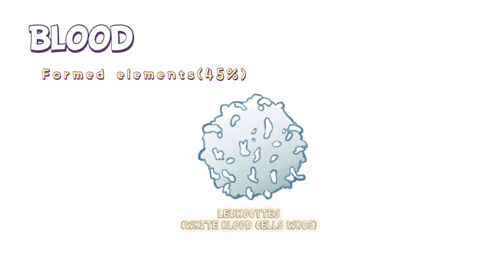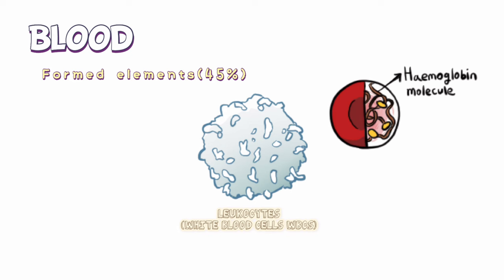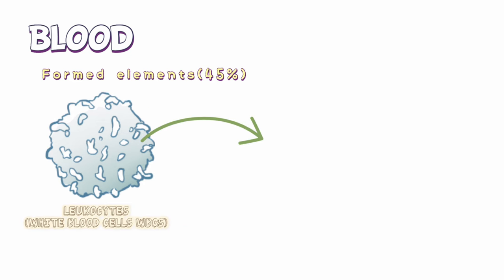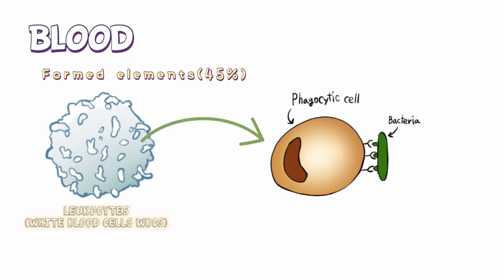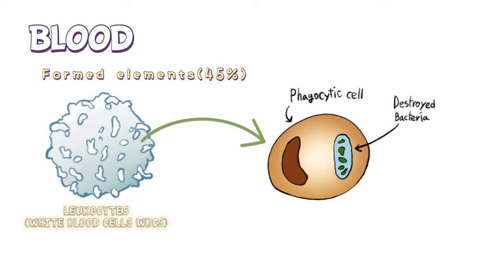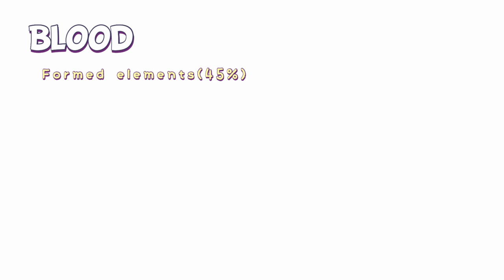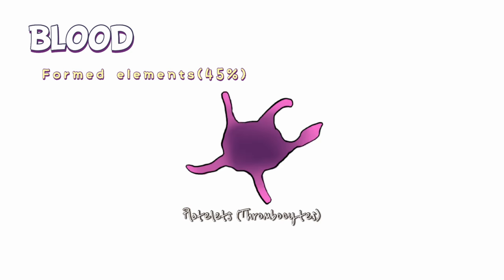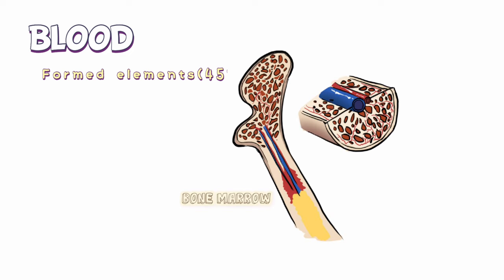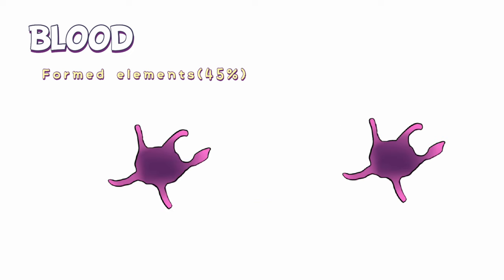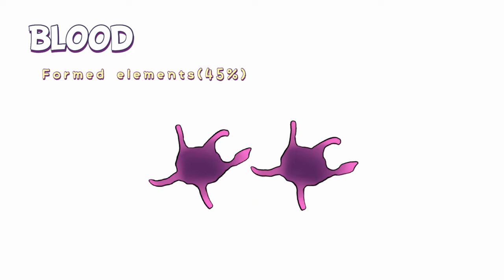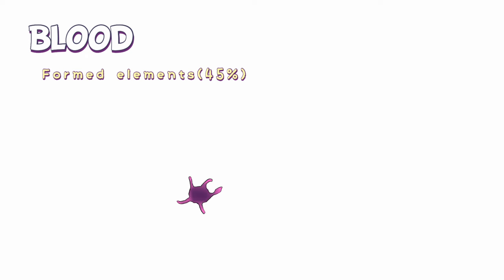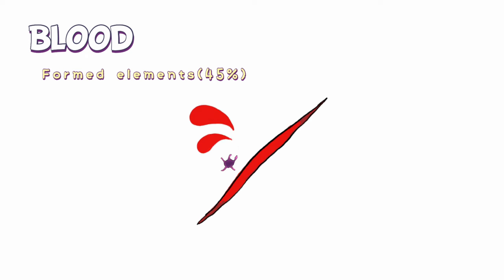Leukocytes, or white blood cells (WBCs), are colorless due to lack of hemoglobin. They include phagocytic cells that destroy foreign organisms entering the body. Platelets, also called thrombocytes, are cell fragments produced in the bone marrow. Platelets cluster together at the site of a wound to act as a plug and help in healing.